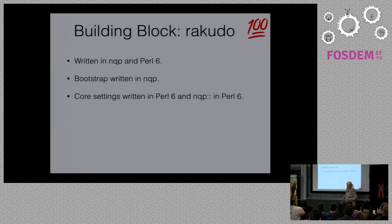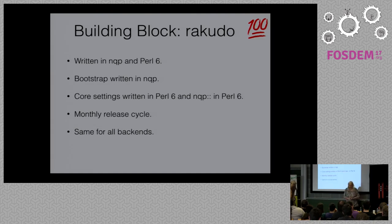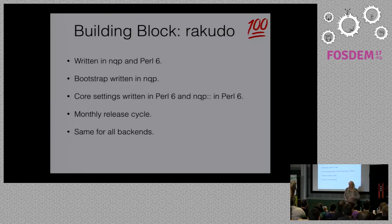On top of that we have the core settings, which basically give you all of the even higher-level stuff like sets, bags, and handy subroutines like map and grep. They're all implemented in Perl 6 and are part of the settings. This also has a monthly release cycle and is the same for all backends — almost. Sometimes the JVM does things slightly differently, so we have some conditional Perl 6 code in the core settings for JVM versus everything else.